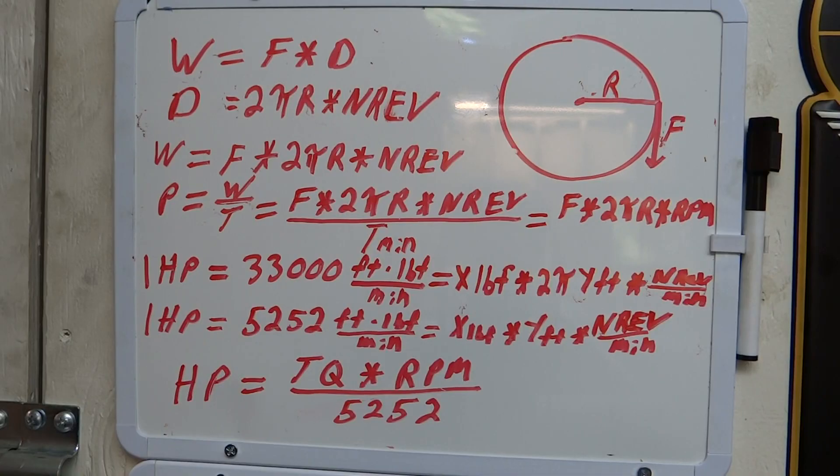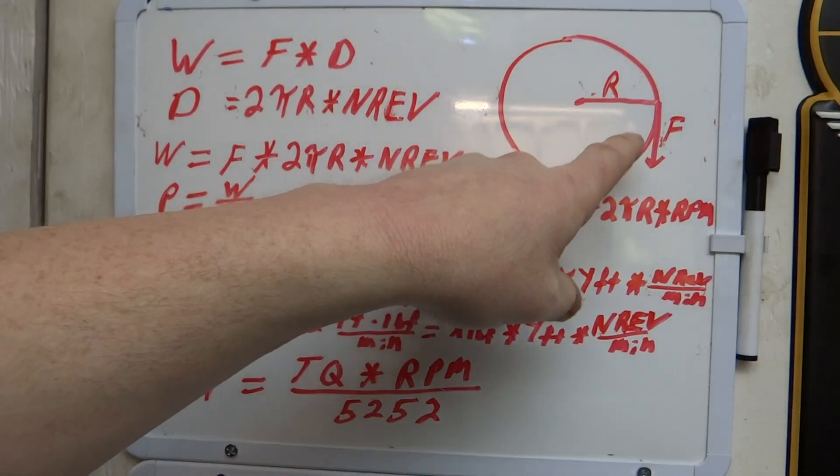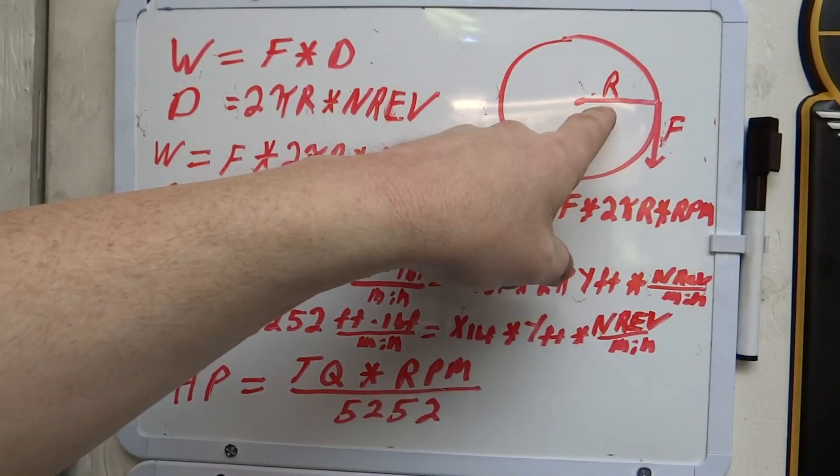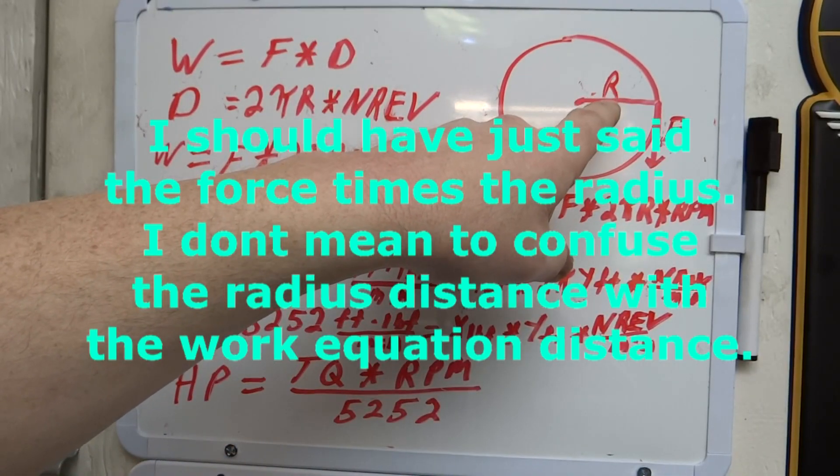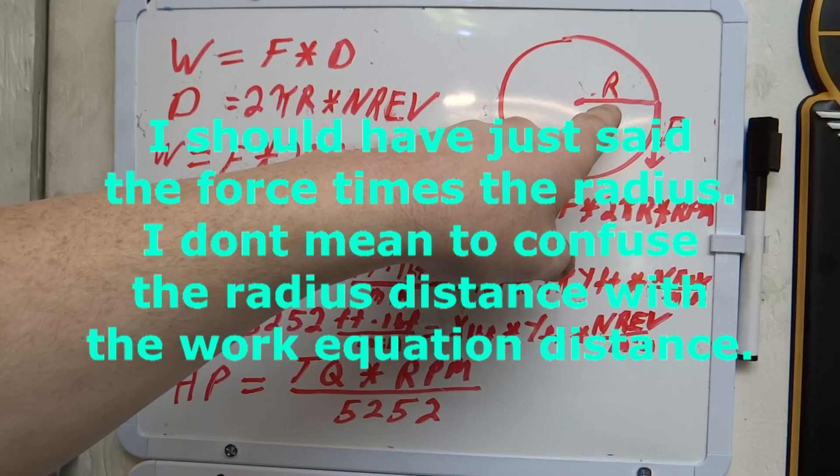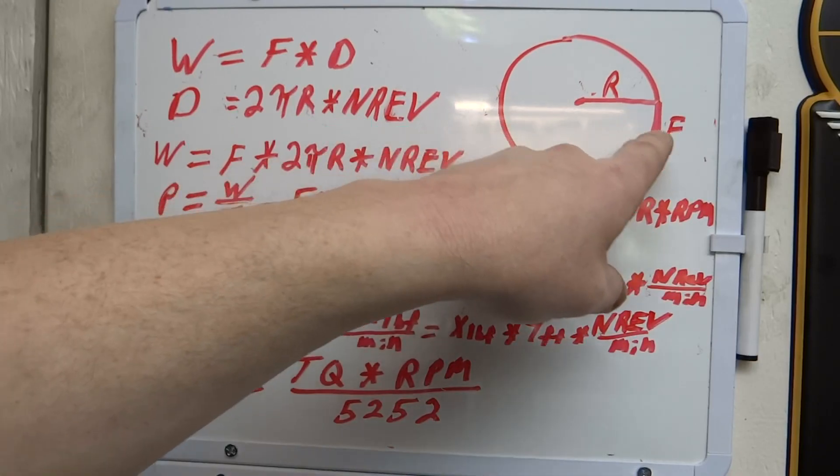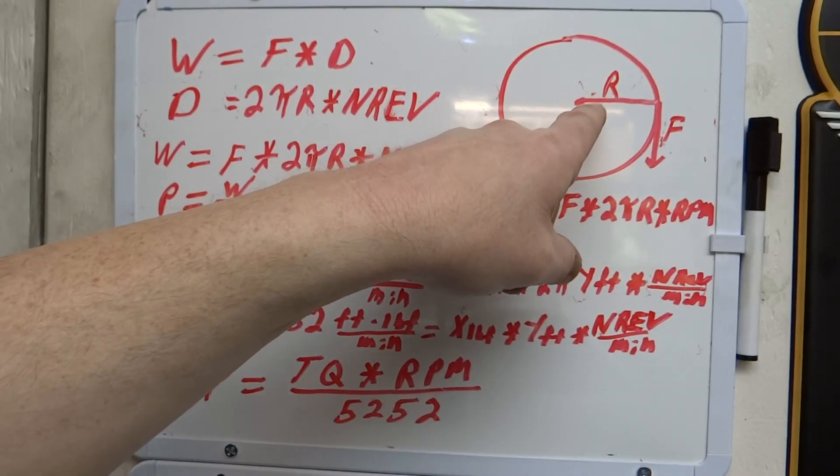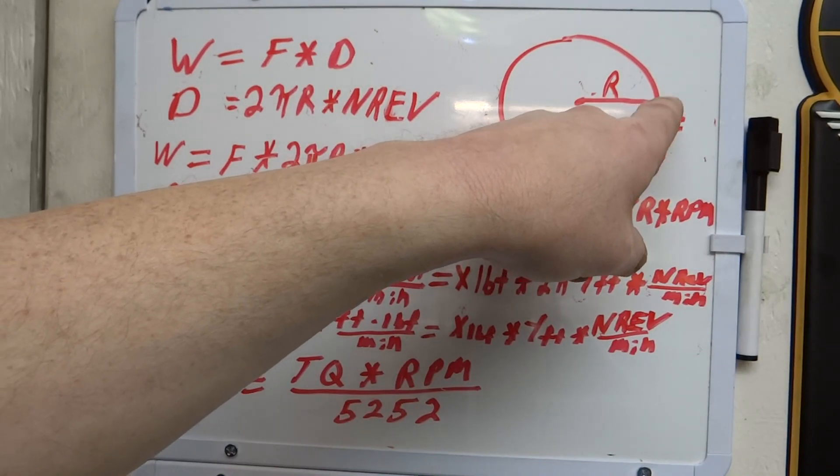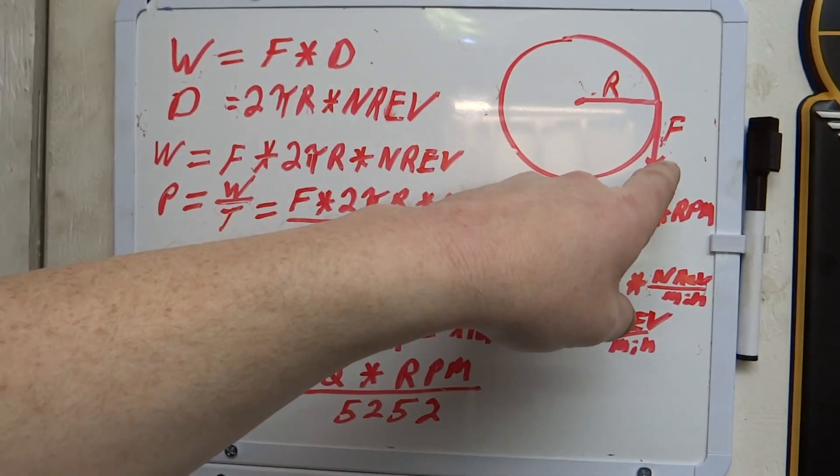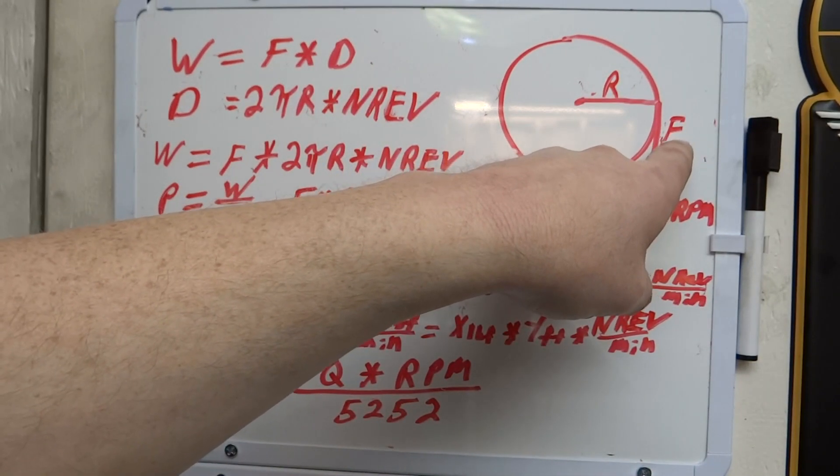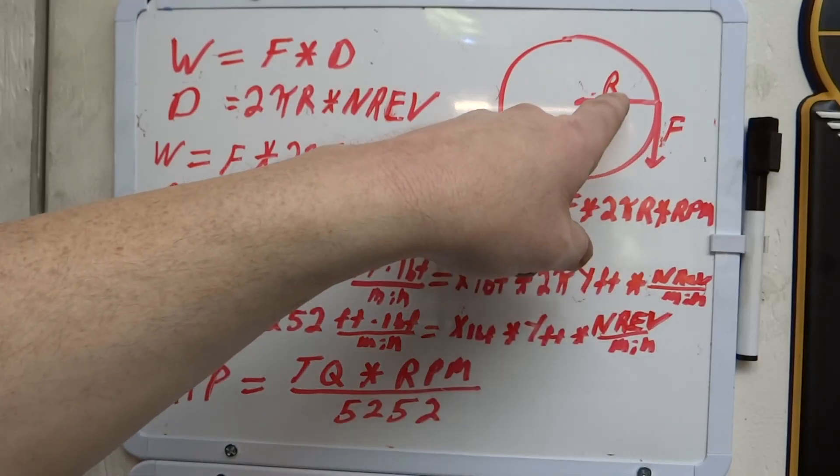Since we're going to be talking about torque in this situation, we need to be looking at the force times the distance. We're going to represent the distance as R, which is going to be the radius. Imagine that lever arm there with a force being applied to the end of that. We'll have that F there in pounds of force and the radius in feet.